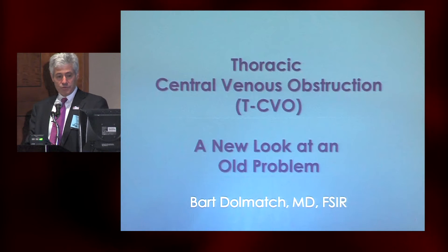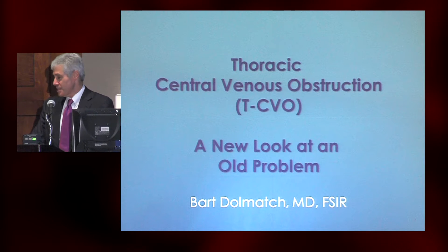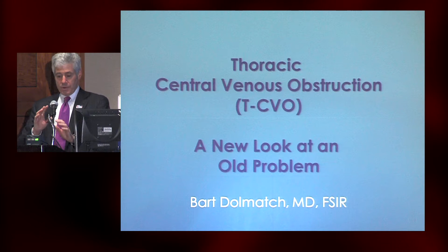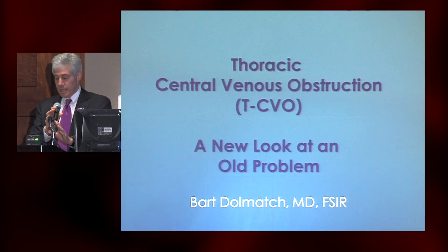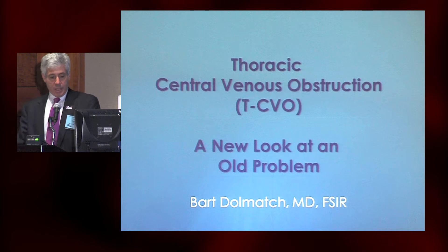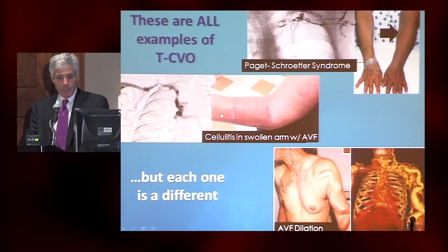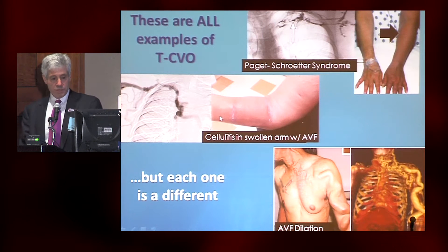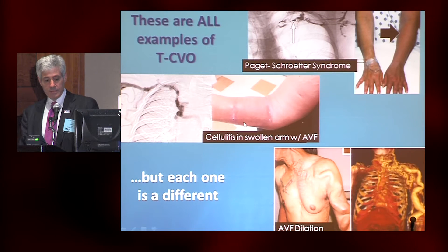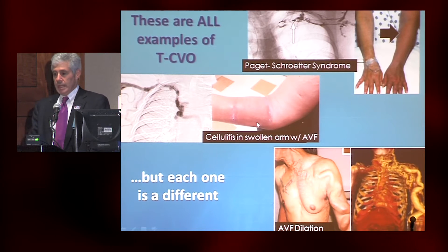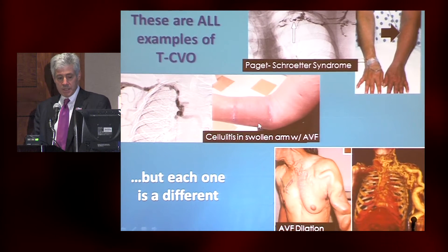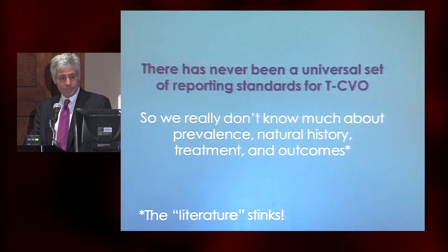I'm going to talk about central venous obstruction — it says stenosis in the program, but I'll broaden it out to be obstruction — a new look at an old problem. These are all different types of central venous obstruction: Paget-Schroeder syndrome, cellulitis, a swollen arm with an AV fistula, and aneurysmal change over time with central venous obstruction. But each one in some way is different.